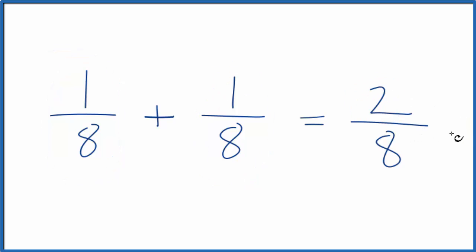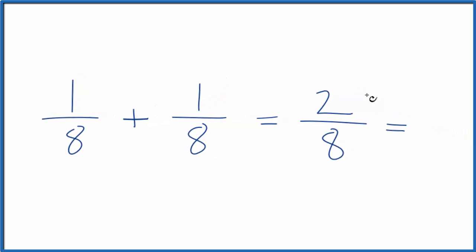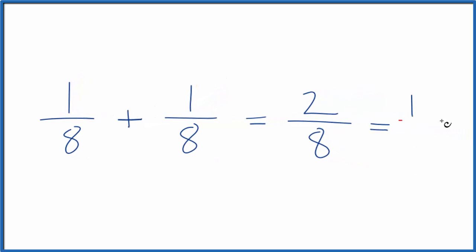We could reduce this further, divide the top and bottom by two. Two divided by two is one. Eight divided by two is four. So one-eighth plus one-eighth equals one-fourth.